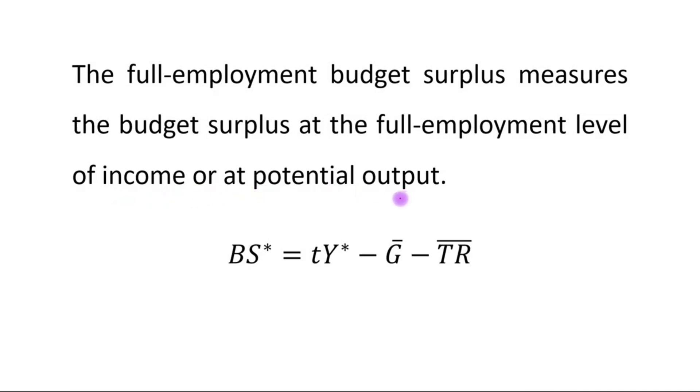The full employment budget surplus equals tax rate times potential output minus government expenditure minus transfer payments. The formula is BS* = tY* - G - TR, where the full employment budget surplus is measured at potential output.